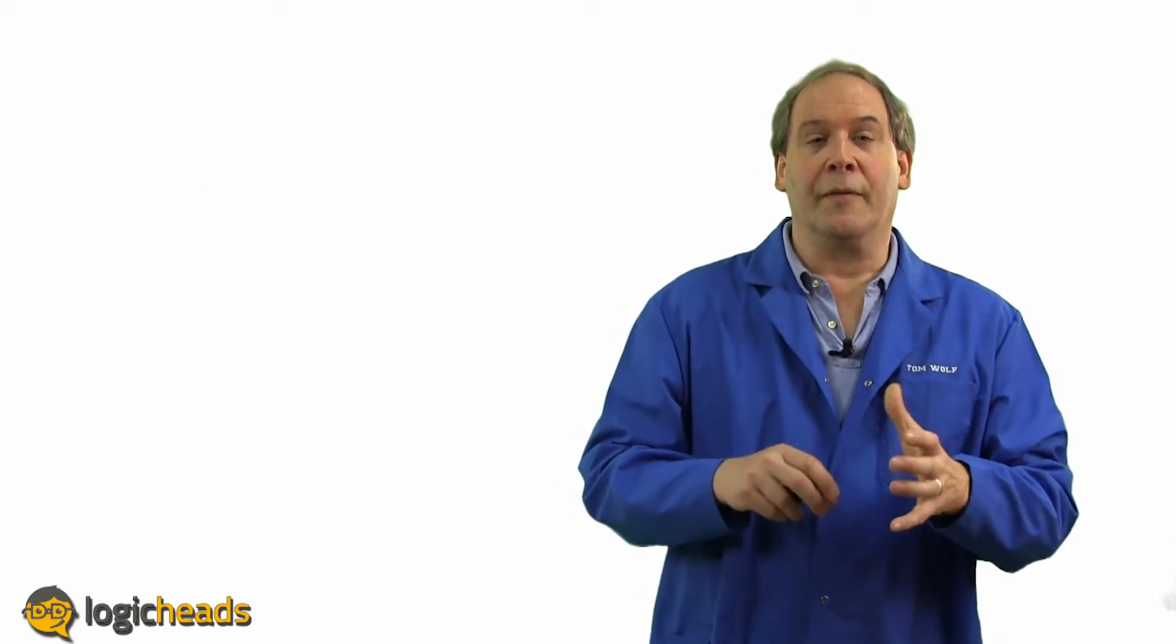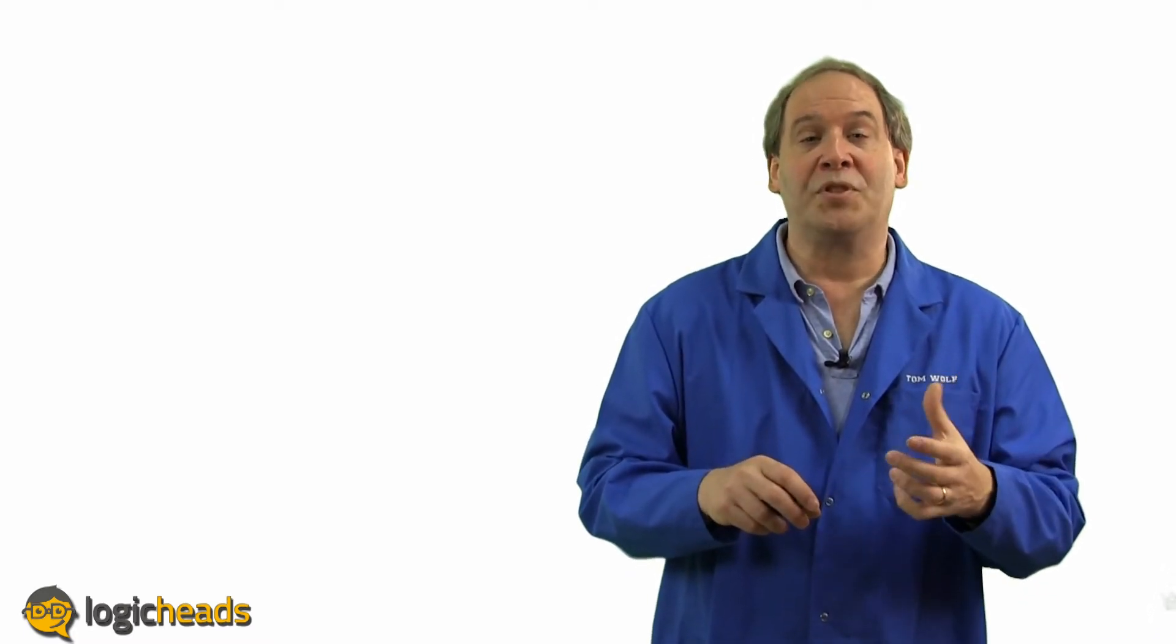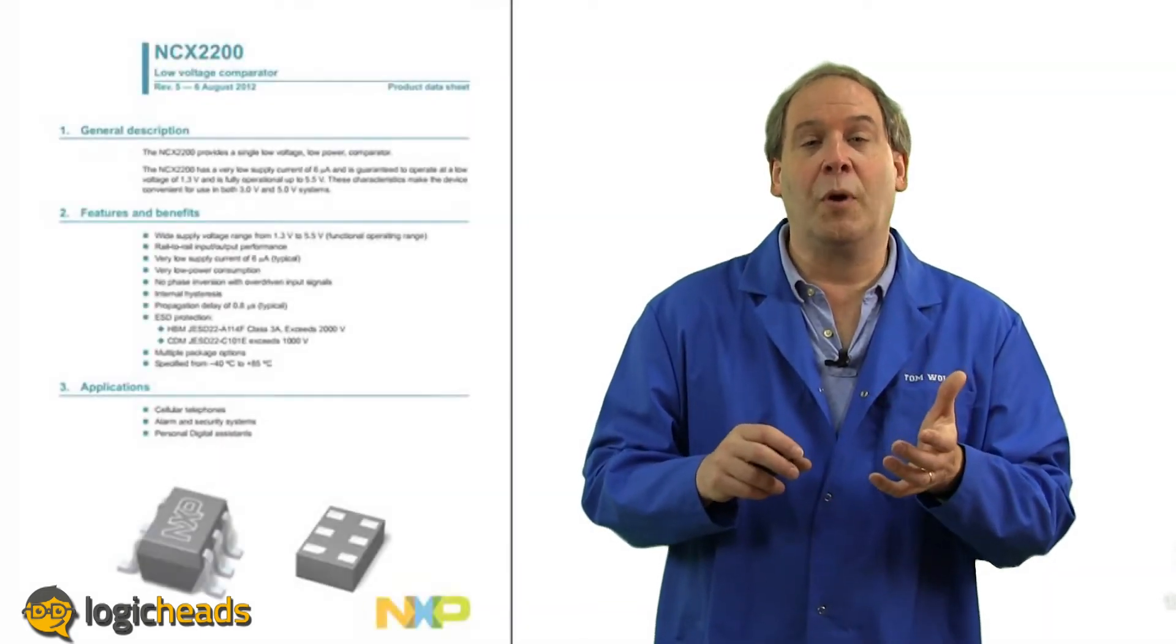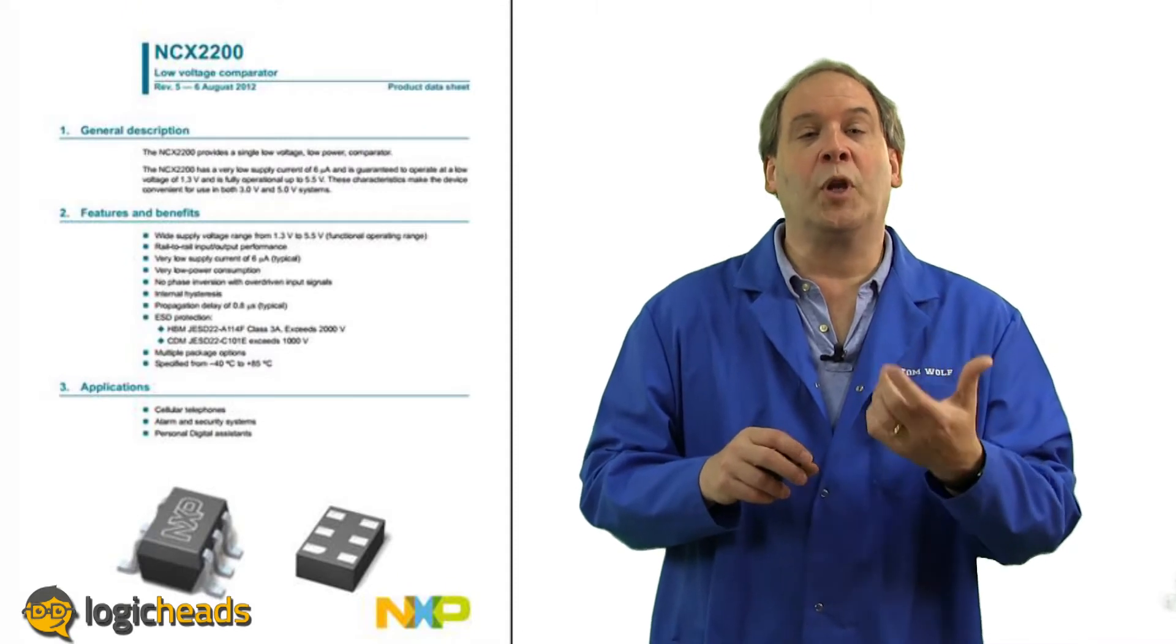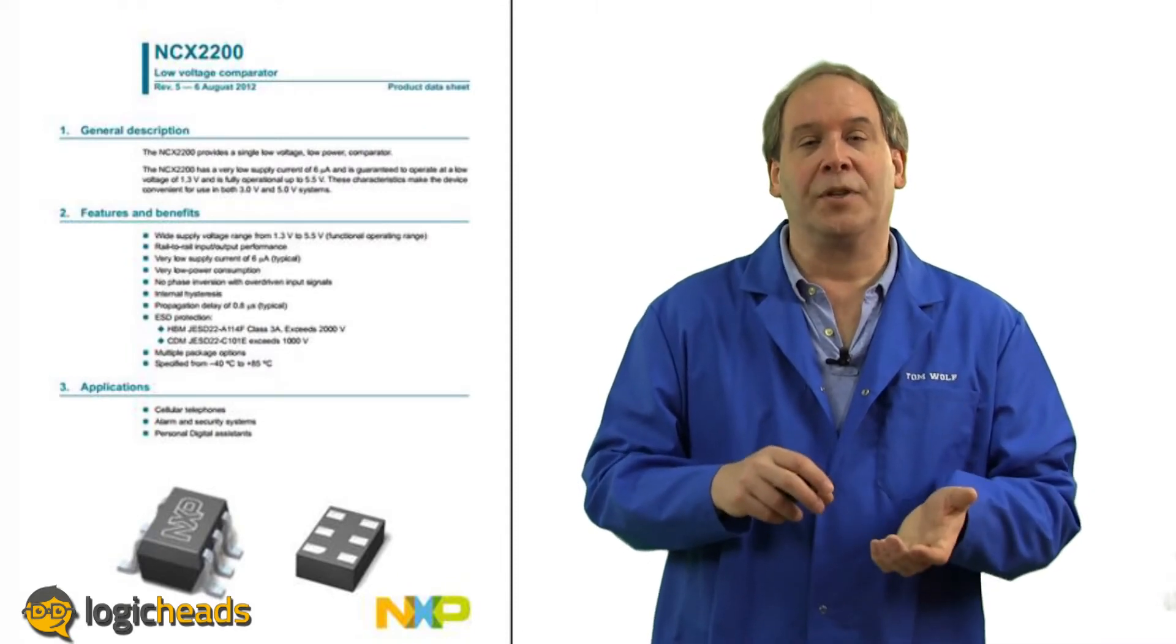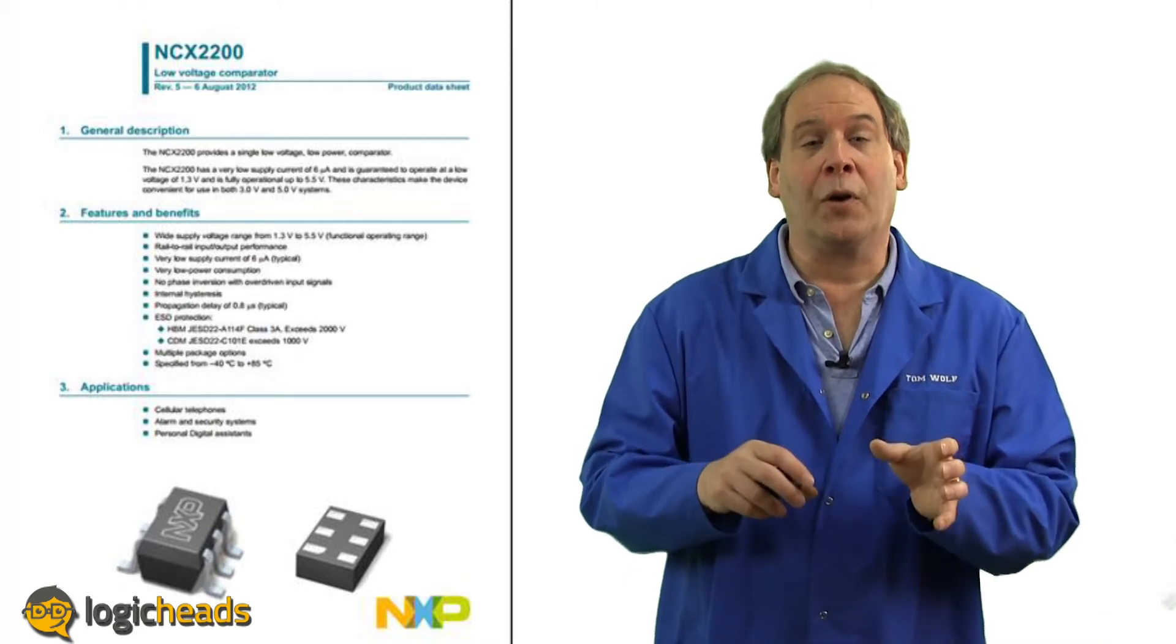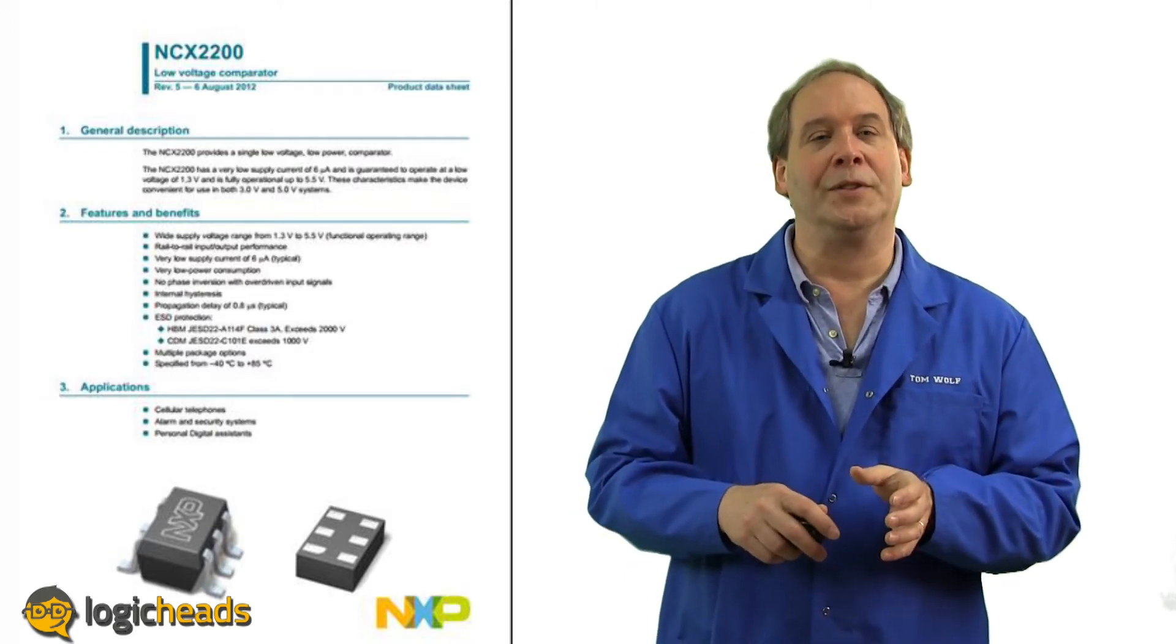The first comparators were rather power hungry devices. The venerable LM393 could consume as much as a few milliamps just sitting there, monitoring the two inputs. But the newest generation of comparators, like this NCX2202 family, consumes only about one one-thousandth as much. That's a couple of microamps. Now, with that low of a current, you can do some really interesting applications.